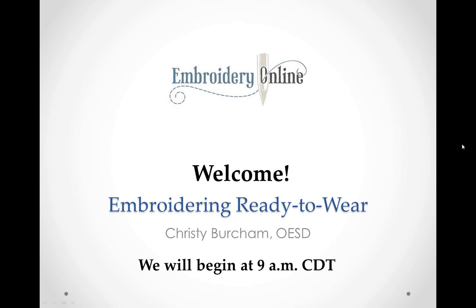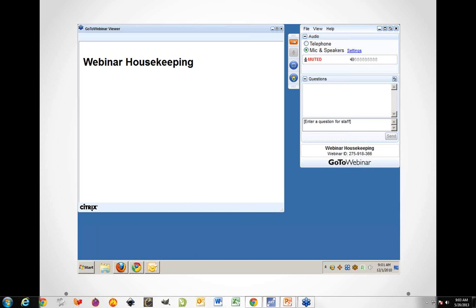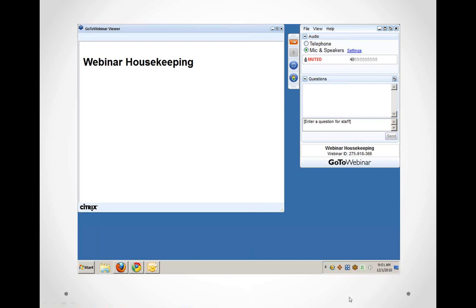The presentation is being recorded, so it will be available to you after the session is over. When you're looking at your screen, you're going to see two main areas. On the left-hand side you will see the GoToWebinar viewer — that's where you'll see the presentation itself. You can enlarge it by clicking and dragging the little triangle corner, or use the Maximize button to take up the full screen.